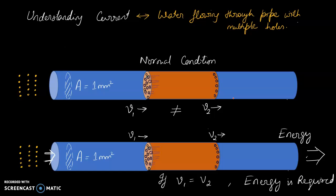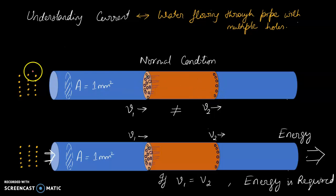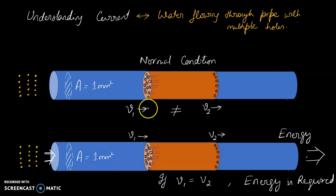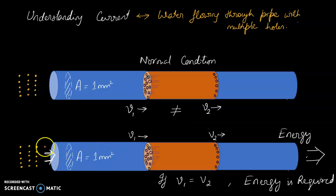Next, we can understand that if water — or charge — is flowing from here and suddenly there is some box in between with multiple holes, what will happen? The water will still flow through it, but obviously the speed of the water will decrease. Whatever speed was V1 here, the flow will come down to V2. If some energy is driven so that the electron maintains the same speed through the box, then you need some energy.